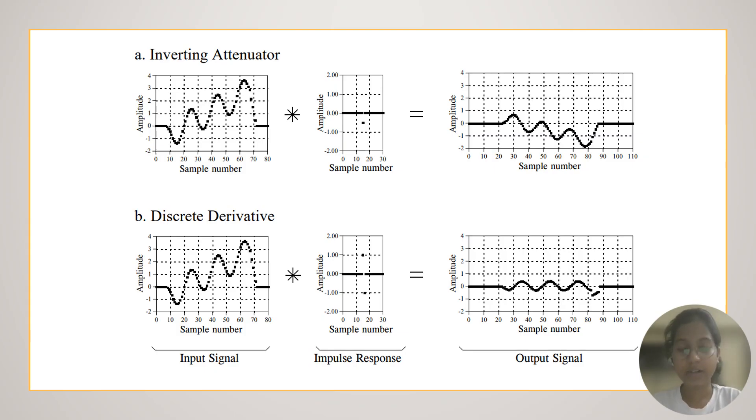And discrete derivative results in an output signal that is related to the slope of the input signal.